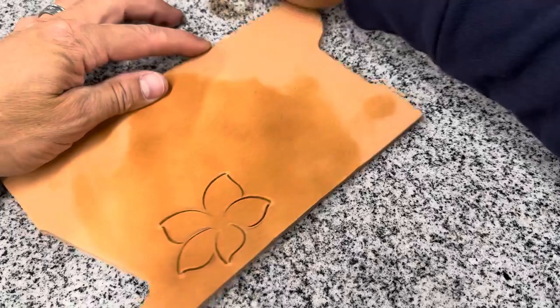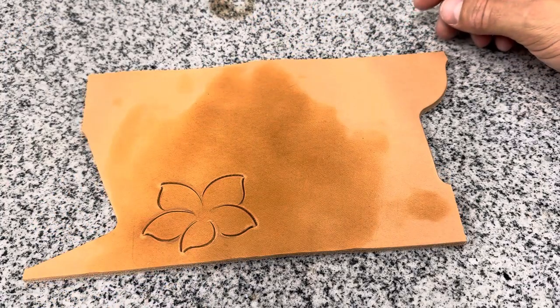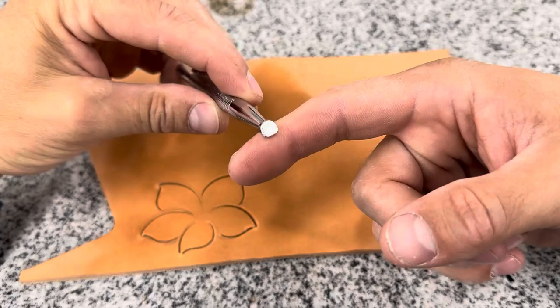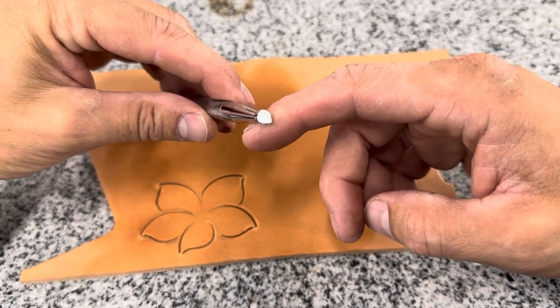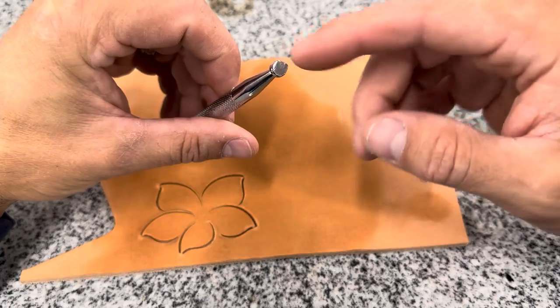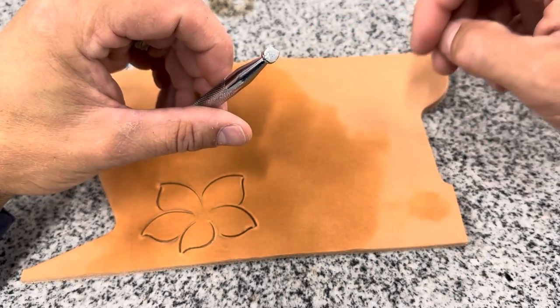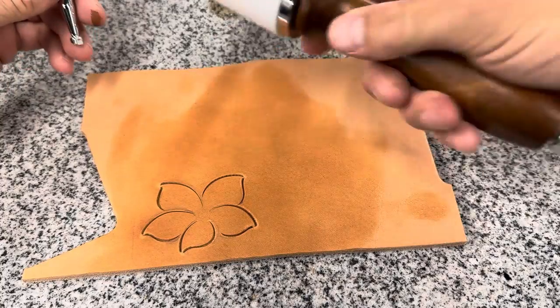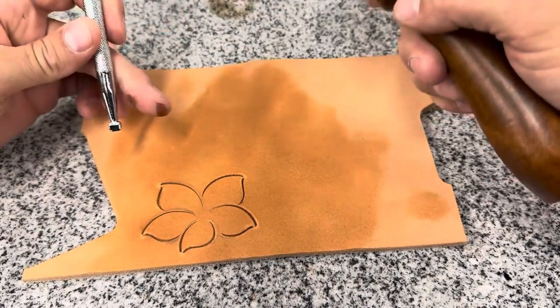All right the next tool we're going to get is called a bevel. Now this particular tool this is the large bevel that comes in the kit. It's got a decent angle on there it's got a little bit of checkering you can see some texture to it. Now the rest of these tools we're going to be hitting with our maul on the top of that tool.